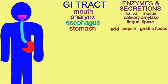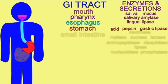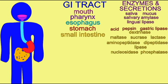The stomach produces acid which kills microbes, pepsin for the digestion of proteins, and gastric lipase for the digestion of fats. More of this is produced in infants.